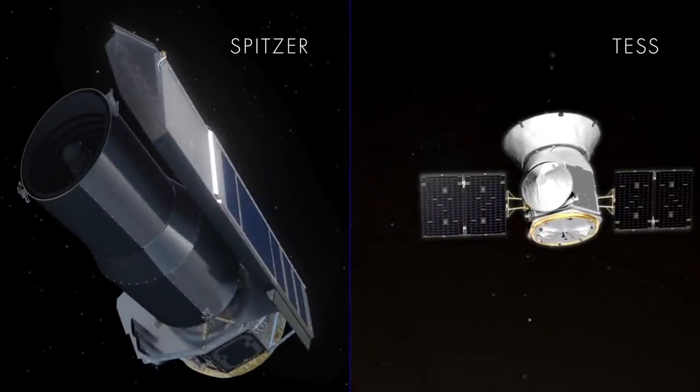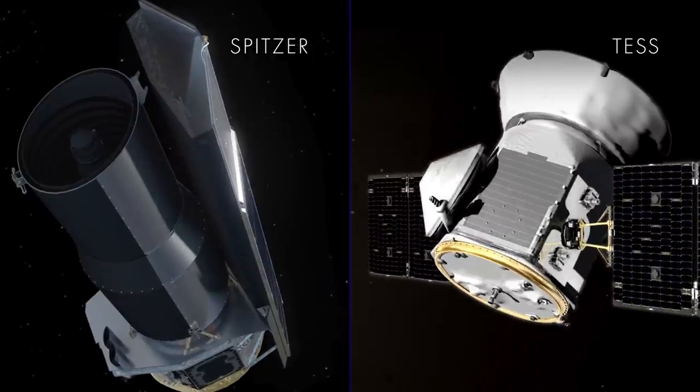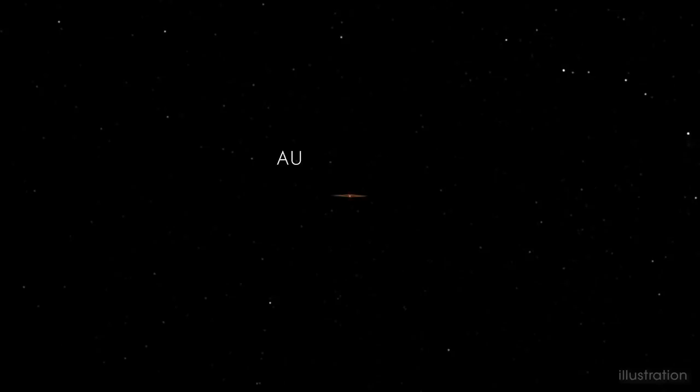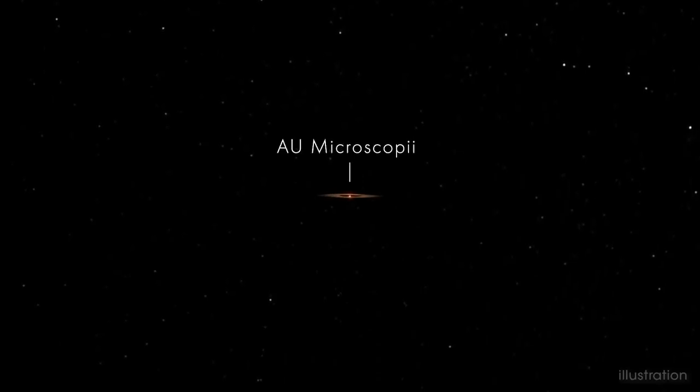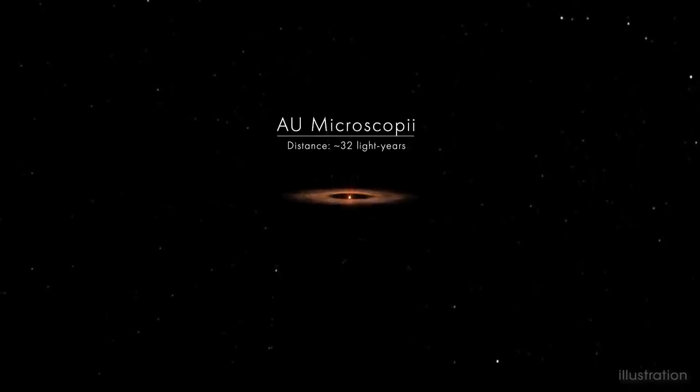NASA's TESS and Spitzer observatories have found a long-sought world orbiting the star AU Microscopii, or AU Mic for short. Located about 32 light-years away, the system will be a touchstone for understanding planetary evolution for decades to come.